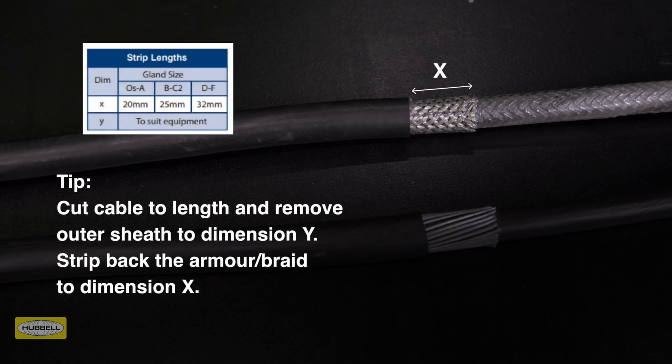Remove a further 20mm of outer sheath for cable glands OS to A size, 25mm for B to C2 size, and 32mm for D to F size.